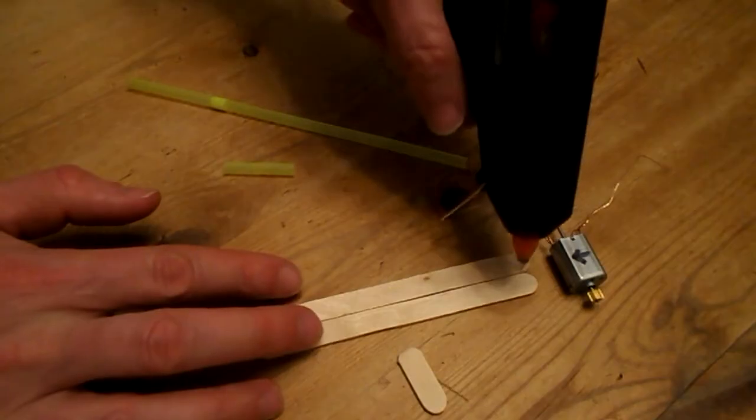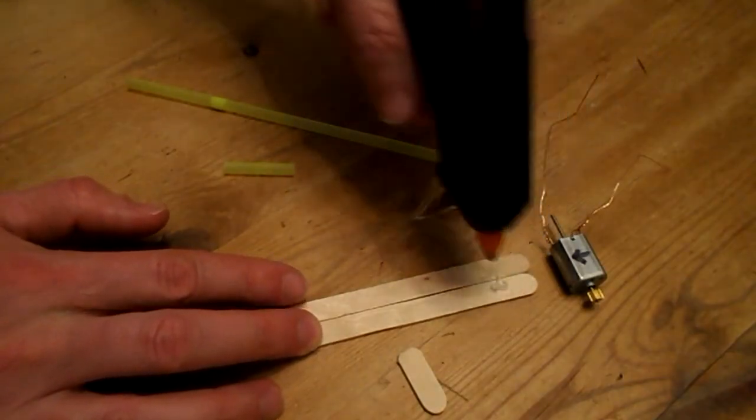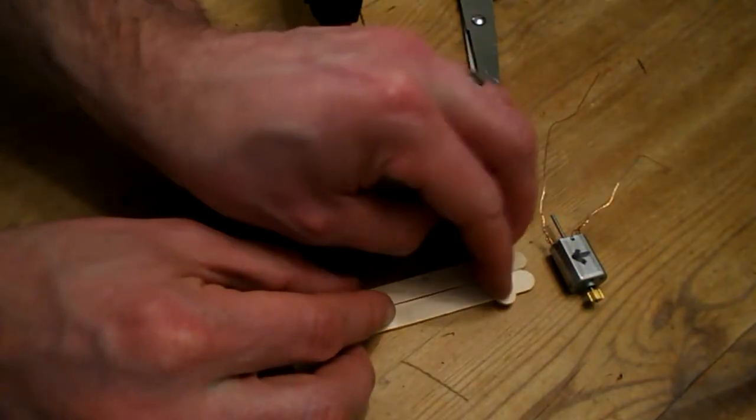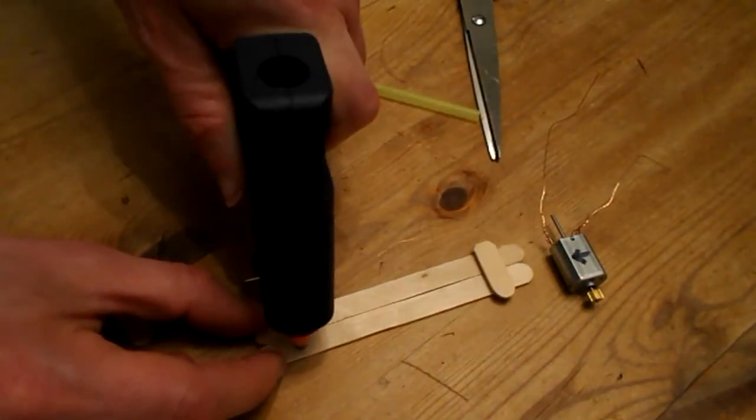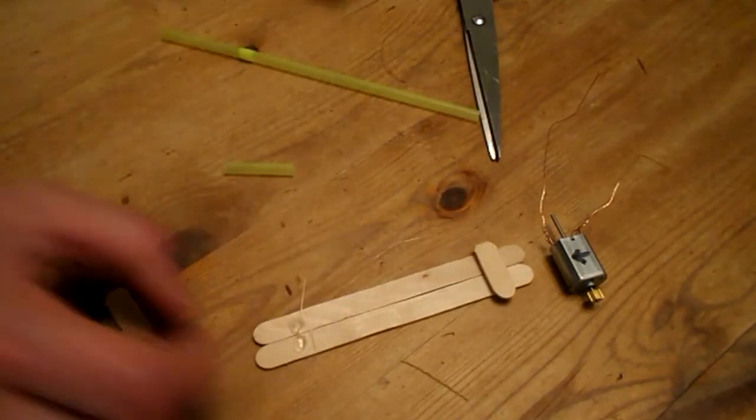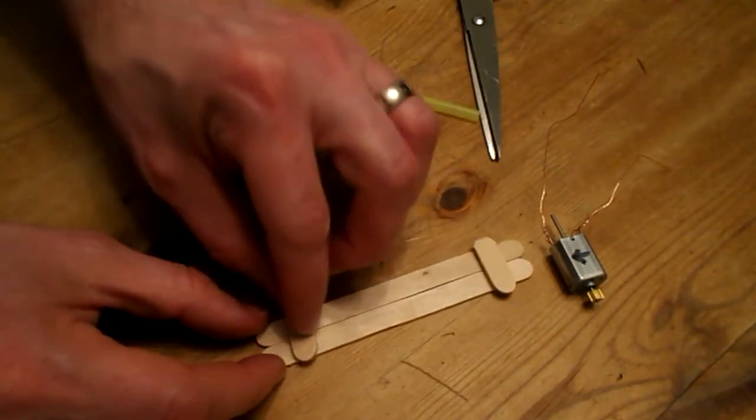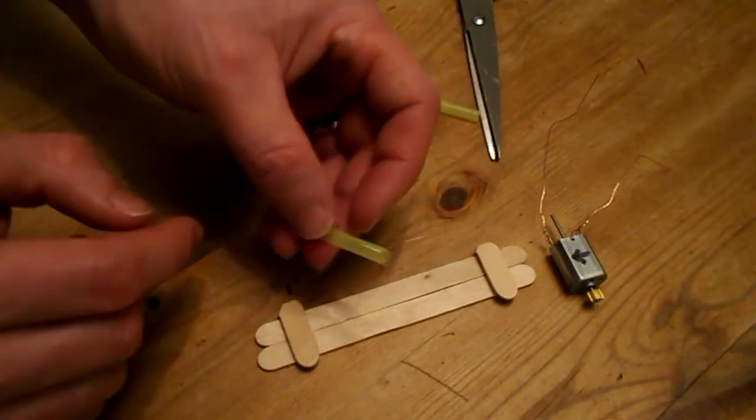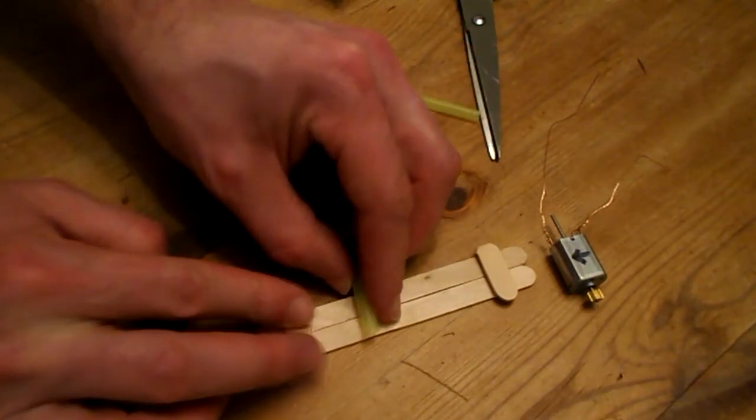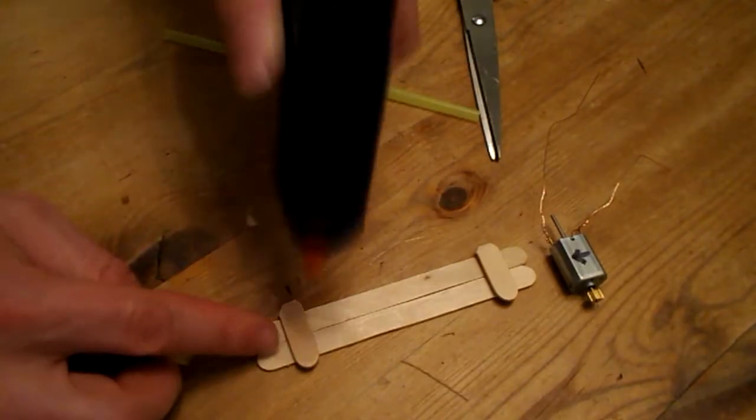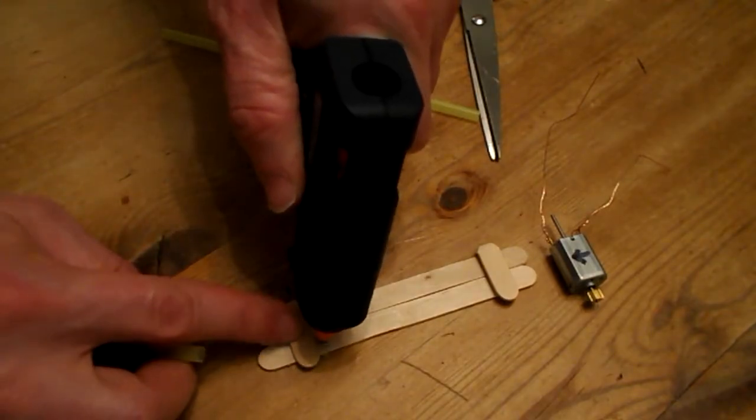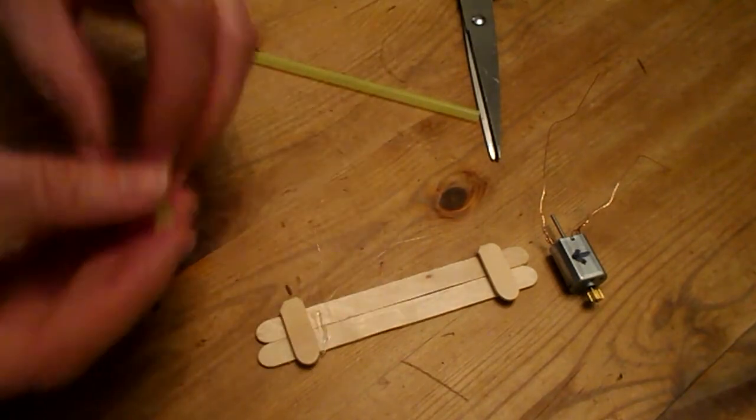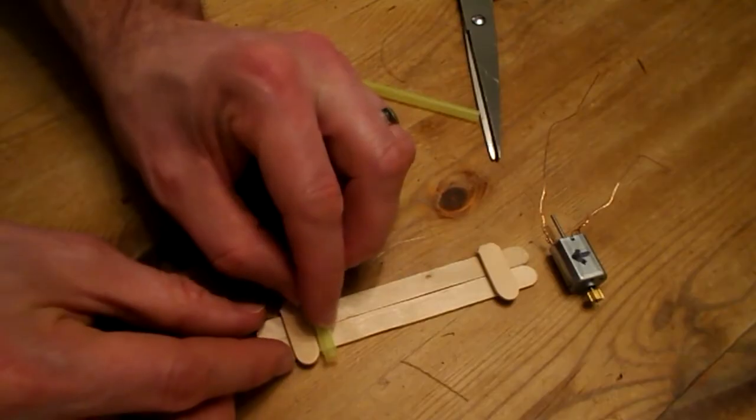So I'm just using a glue gun. Also I've cut off a bit of straw here. This is going to run as the first axle. So we'll glue that on as well. And we'll let that dry.